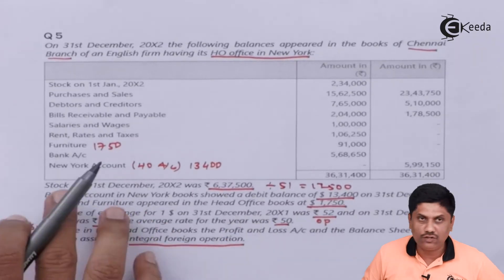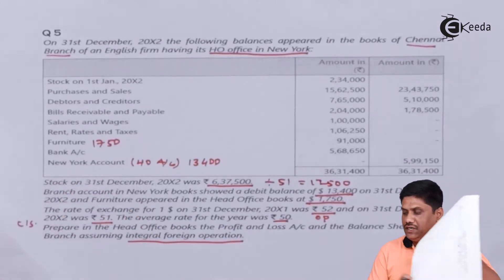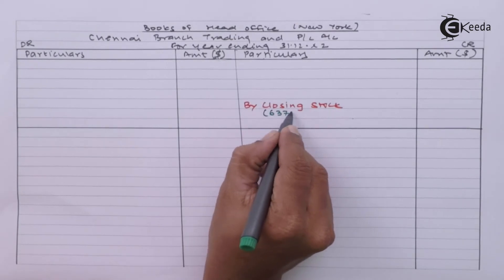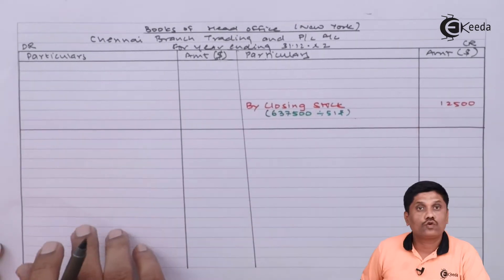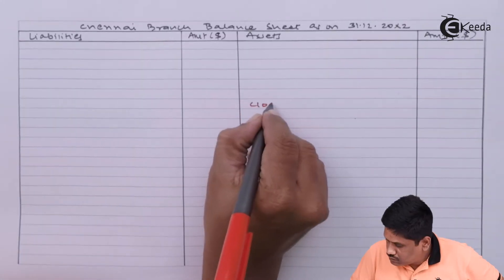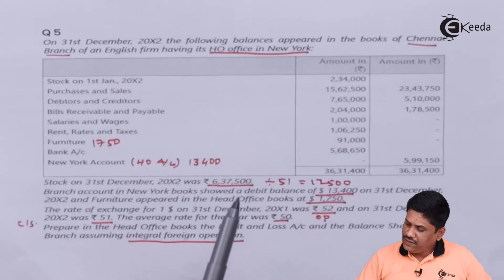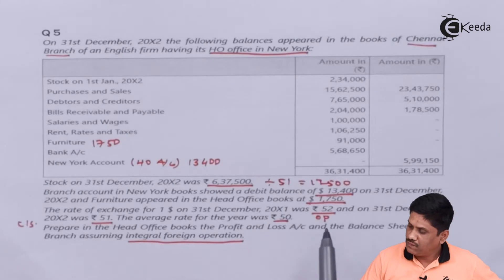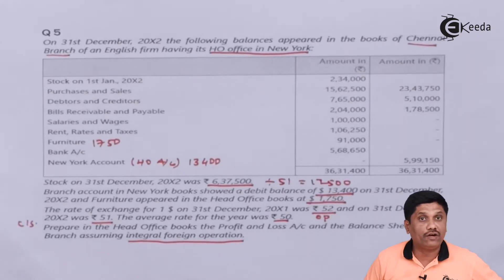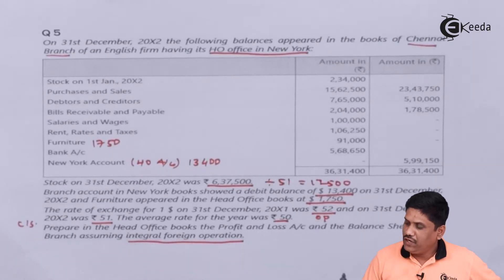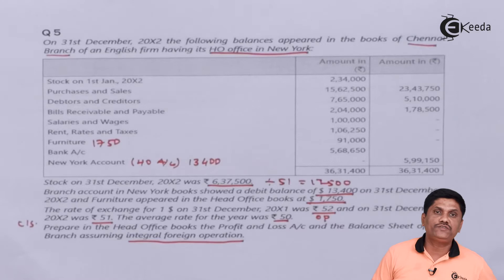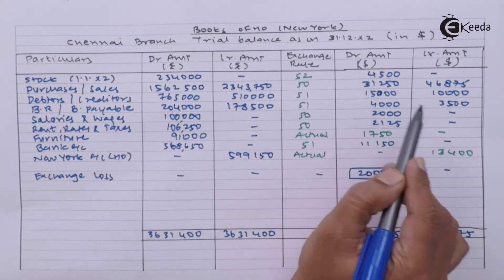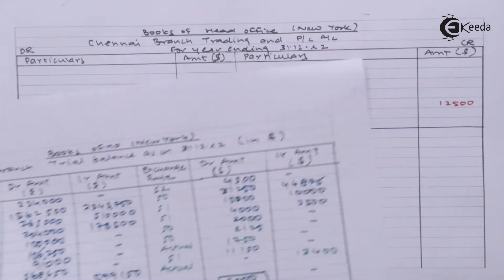While posting, I will take 12,500 dollars as closing stock of Chennai branch and write it on the credit side of the trading account. In the balance sheet on the assets side — branch account in New York book showed a debit balance, which we have already considered as 13,400 in our trial balance. Furniture has also been taken at the actual rate when converting the trial balance. There are no other adjustments, so we simply transfer the branch trial balance into the final account of the branch. Opening stock of 4,500 will come into the trading account.